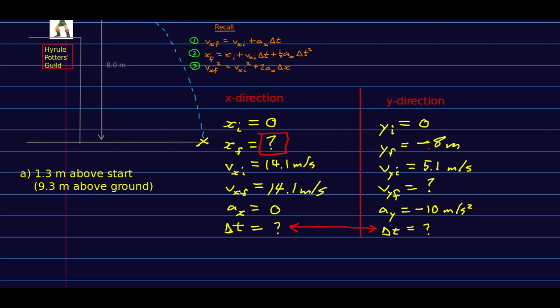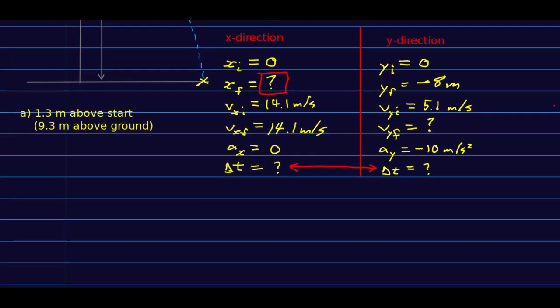So in that case, the easier thing to do, the direct way, is to say, oh look, we know delta y, we know vyi, we know a, we want delta t, and so that's equation two. So let me write out equation two as we're going to use it. And I can slightly simplify that because yi is zero. And if you look at that, you're going to realize that that's a quadratic. Okay, so I'm going to pause the video, and I'm going to solve for delta t. You should try to do the same.